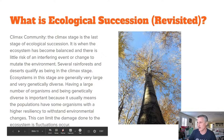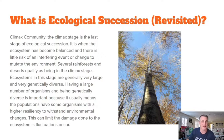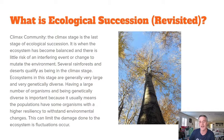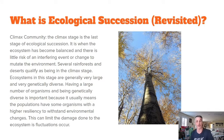A climax community is the last stage of ecological succession — when the ecosystem has become balanced with little risk of a major interfering change. Several rainforests and certain deserts qualify as being in the climax stage. Ecosystems at this stage are generally very large, very genetically diverse, and have a large number of organisms. Being genetically diverse means populations have high resiliency to withstand environmental changes like drought, limiting the amount of damage done if a fluctuation does occur.